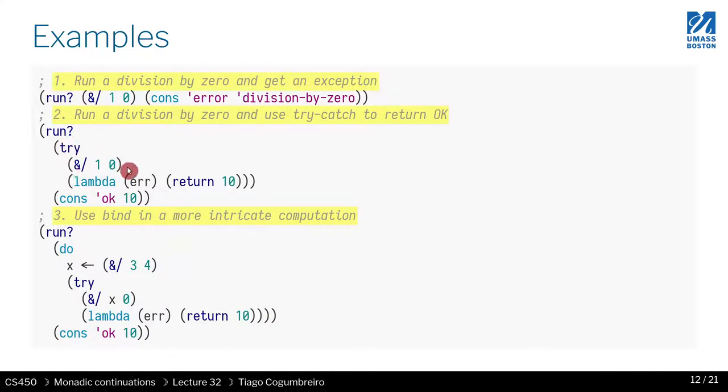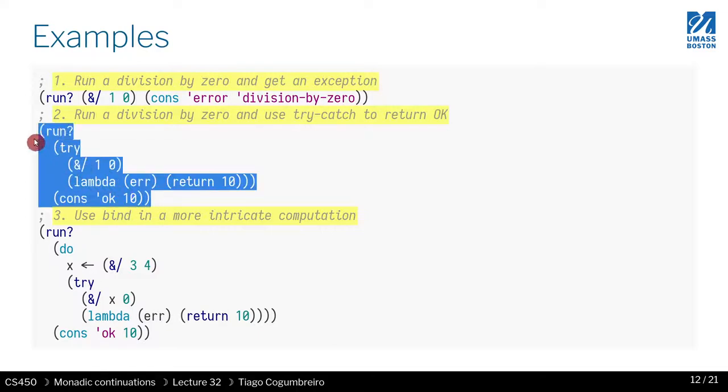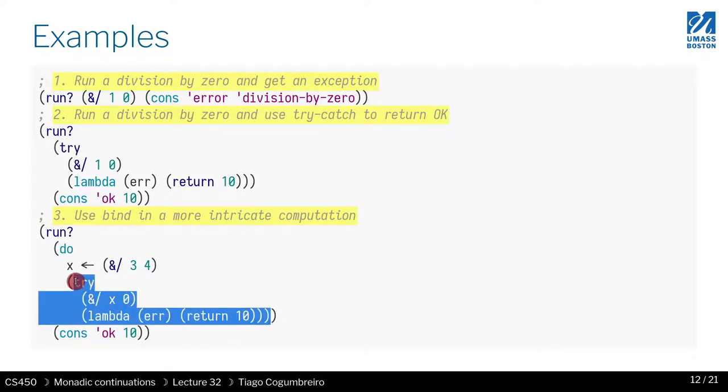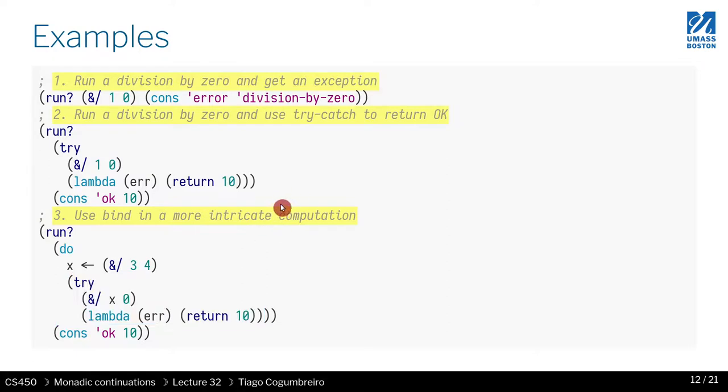And what you will see is that this whole thing returns 10. And then if you extend the notation, the denotation, you can make it even cleaner. Which is to say, you assign X to 3 divided by 4. And then you try. And you have an exception here. And then you can wrap this all around.